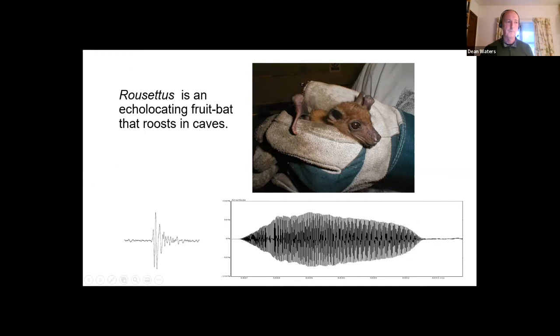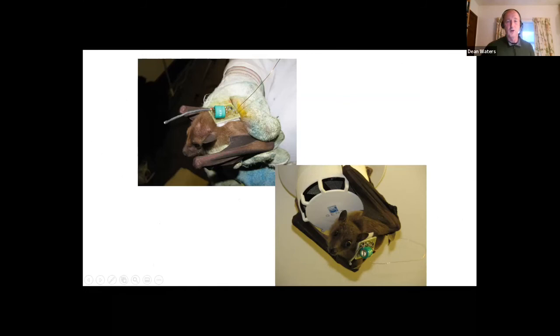Their echolocation system is very different to the microbats. This is a typical microbat call with very long duration waveform, and Rousettus clicks—it clicks with its tongue ultrasonically. It has this very strange, very short duration impulsive type structure. So we were interested in finding out a little bit more about how this works.